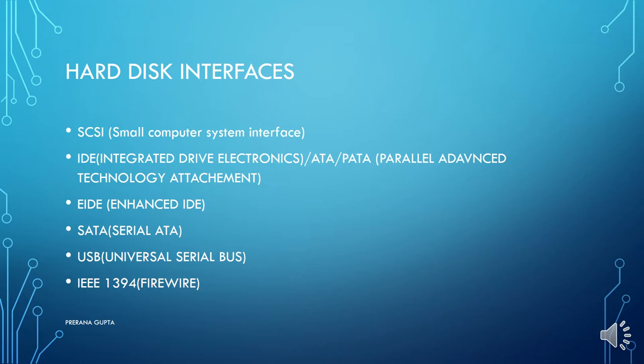A hard disk drive interface is a physical connection of a drive to the PC's expansion bus. We already know there are expansion slots on the motherboard, studied in the previous unit. So it is a physical connection between the drive and the PC's expansion bus — your hard disk connects to the motherboard through this interface.